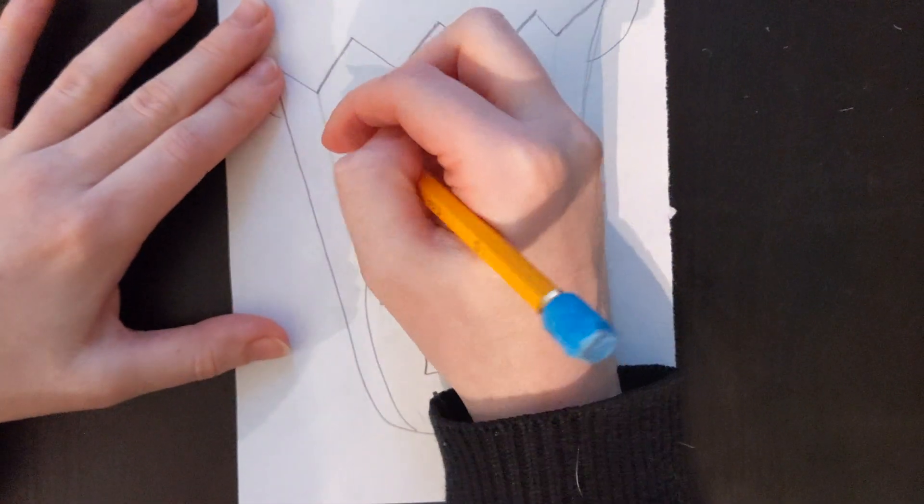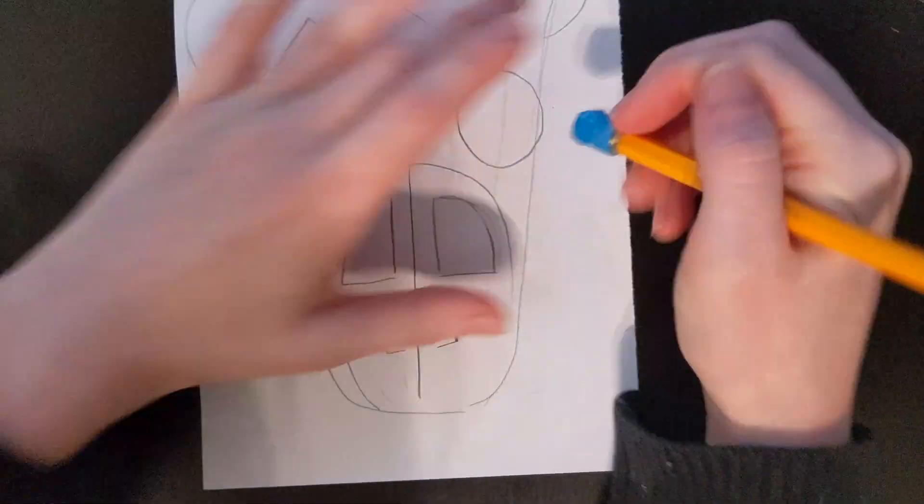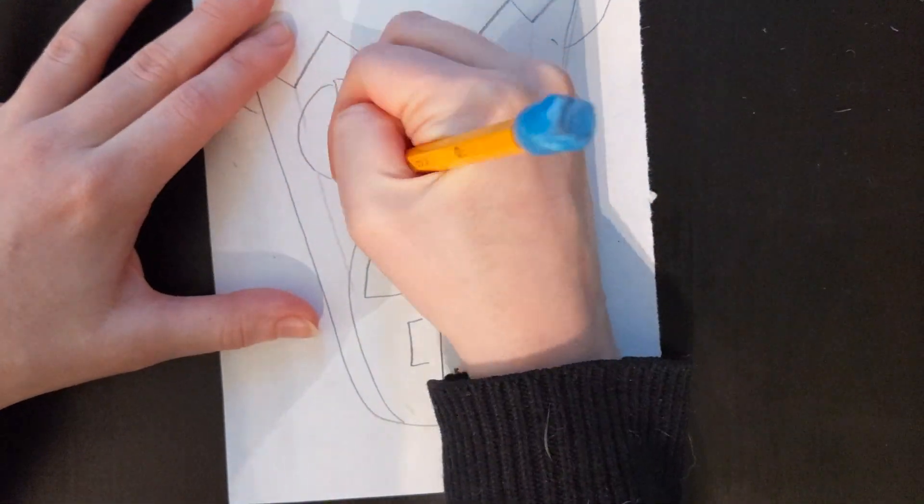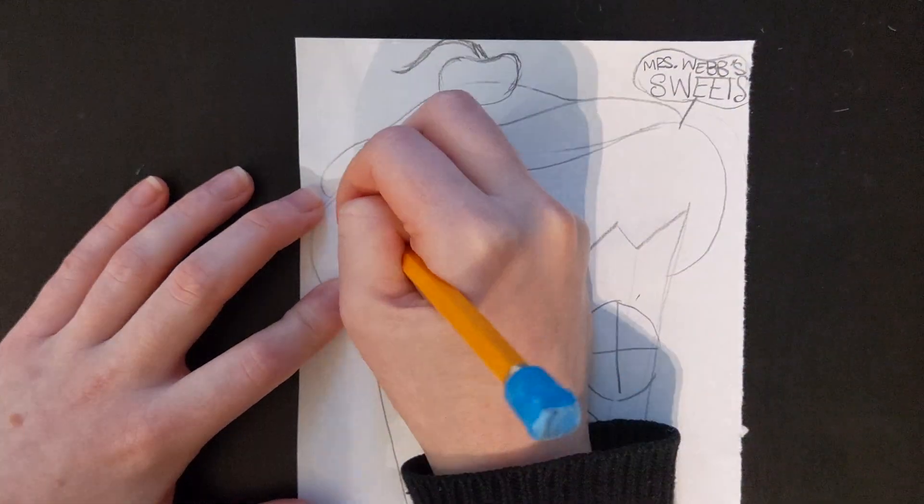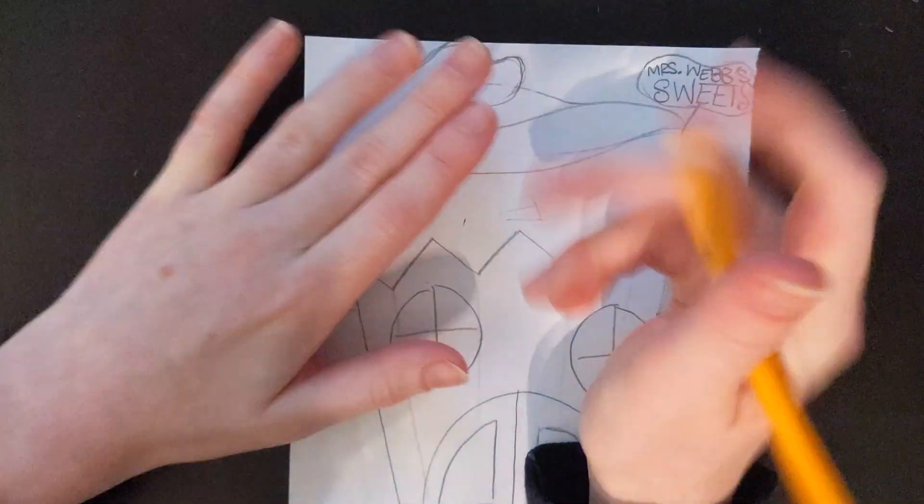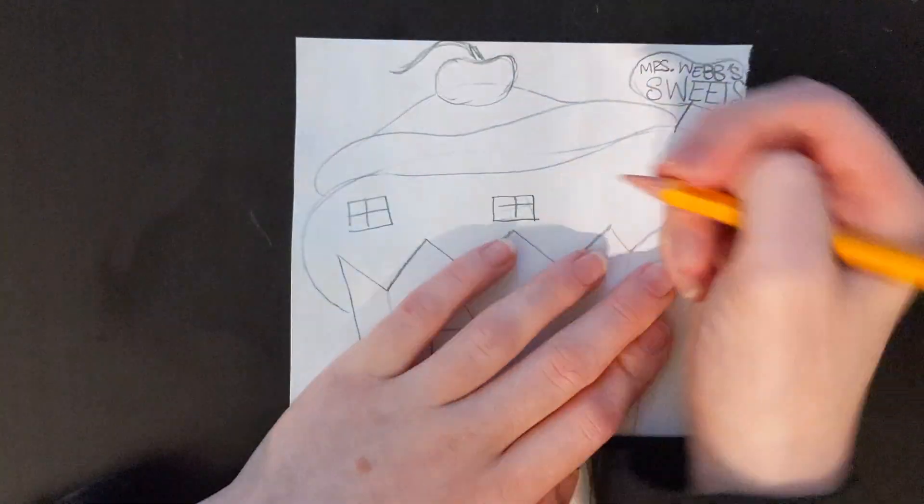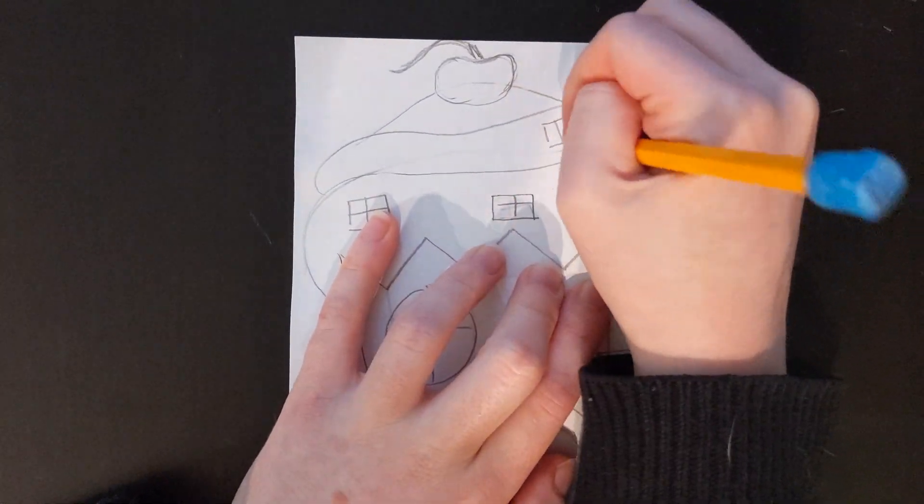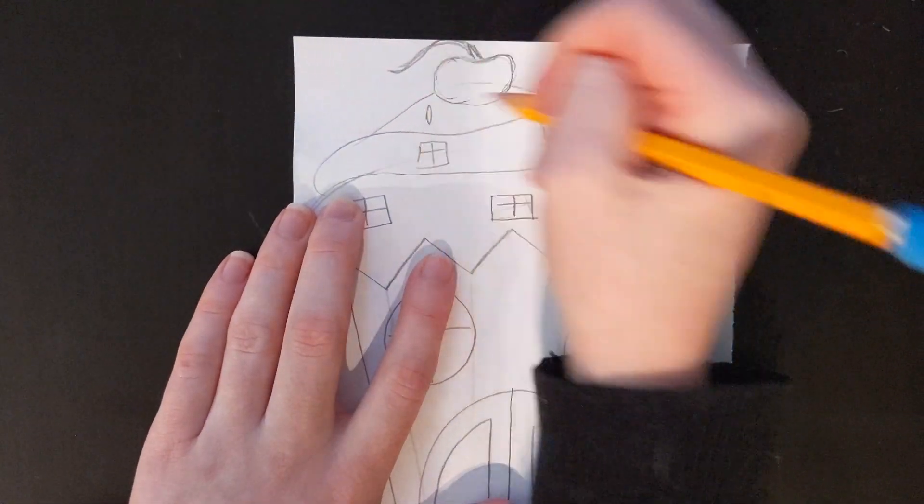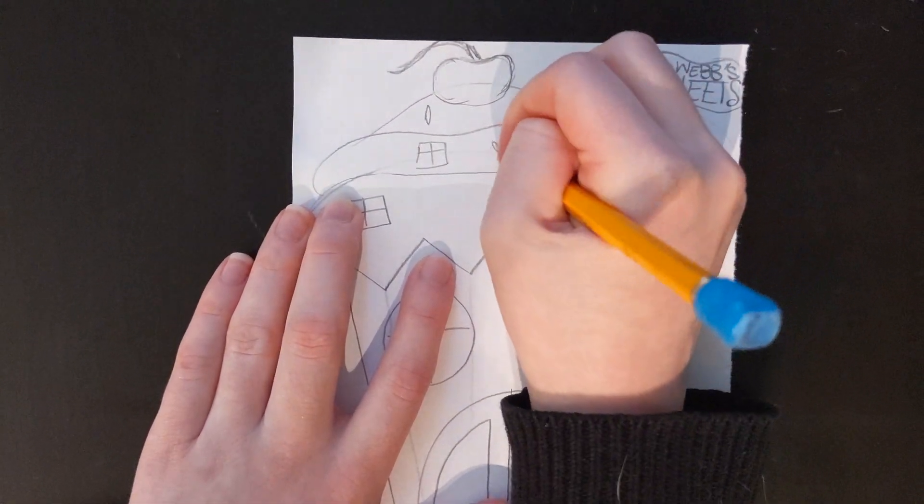Now I'm going to add in two windows. And then now I'm going to add in some sprinkles and some windows up here too, just to make it look a little bit more interesting. Then some sprinkles going in different directions.